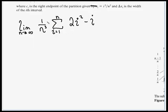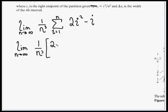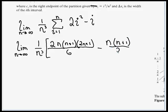We pulled things out in front of the summation symbol; now let's do our formula substitution for those i's. We still have our limit as n goes to infinity, 1 over n to the third. We replace the summation by plugging in the formulas: 2 times the sum of i squared, which is n times n plus 1 times 2n plus 1 all over 6, then minus the sum of i, which is n times n plus 1 over 2. We have two terms in the brackets and n to the third in the denominator.